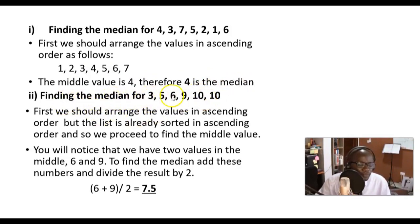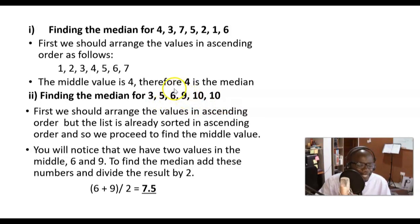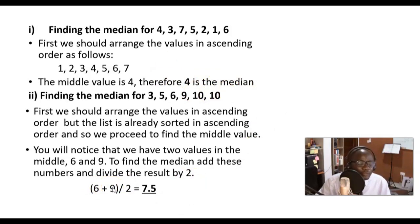Now here is a tricky one — the second list: 3, 5, 6, 9, 10, 10. This list is already in ascending order. Moving one step from each end, we find two numbers in the center: 6 and 9. When there are two middle values, you add them — 6 + 9 — and divide by 2. The result is 7.5, and that is the median. That's the end of the lesson.